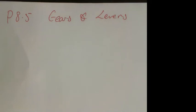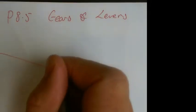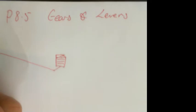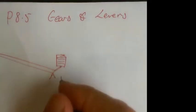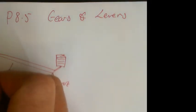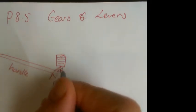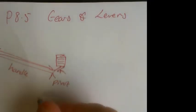P8.5 gears and levers. The first thing you need to know about levers is that the longer the handle, the bigger the moment you can create. If you look at this crowbar, for example, this bit here is the pivot, that's the length of the handle, and that's the length of the lever. This length here is much smaller than this length here. And if you remember from your moments, moment is force times distance.